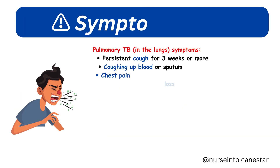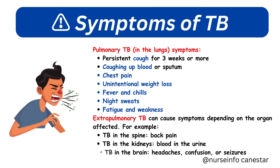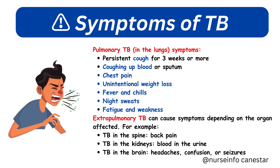Symptoms of pulmonary TB — TB in the lungs — include a persistent cough for three weeks or more, coughing up blood or sputum, chest pain, unintentional weight loss, fever and chills, night sweats, and fatigue and weakness.